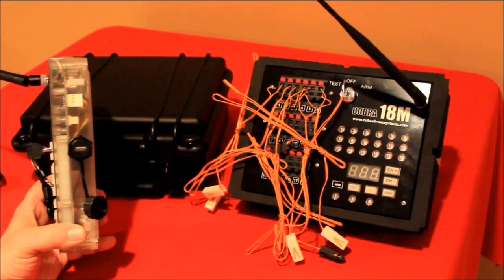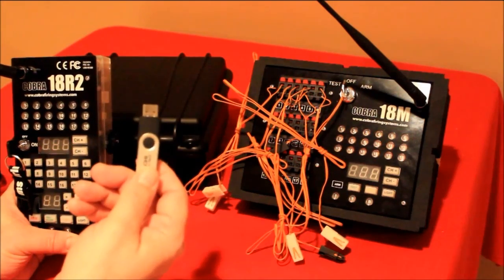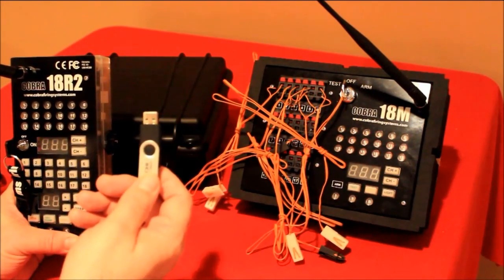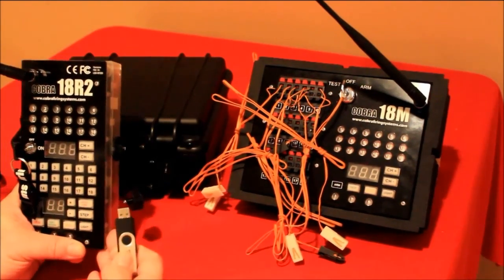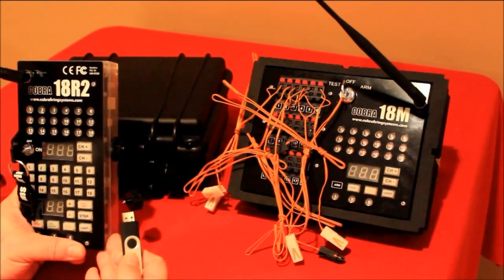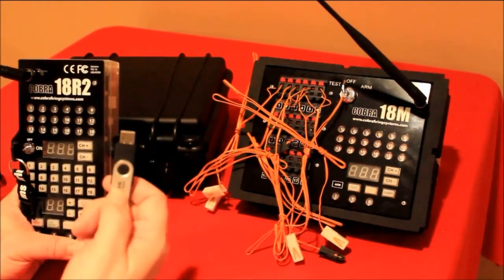To actually upload the script to that port you simply will take a USB memory stick or device. The device must contain a script file. The Cobra system accepts a single file format and there's several different ways that you can generate that file. One of them, Cobra has actually created a Microsoft Excel spreadsheet template that you can download from their site. They've also introduced a new application called Cobra Show Creator, and that application enables you to create scripts with or without music. There's also the industry application called Finale, and you can use that application to generate scripts and then save them to the single file format that is accepted on the 18R2.